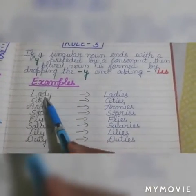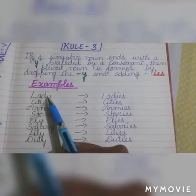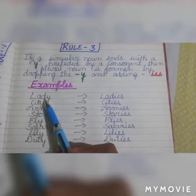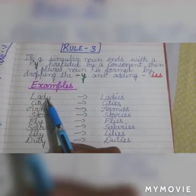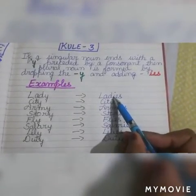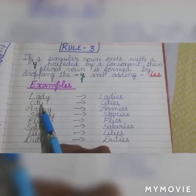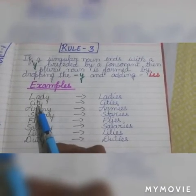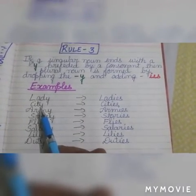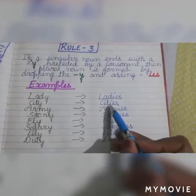Let's see examples. LADY — we can see here L-A-D-Y. What is preceded by Y? Before Y you can see D, which is a consonant. So we will remove Y and add IES, and it becomes LADIES. In the same way, CITY — here we can see T before Y. T is also a consonant. So we will drop letter Y and add IES, and it becomes CITIES.